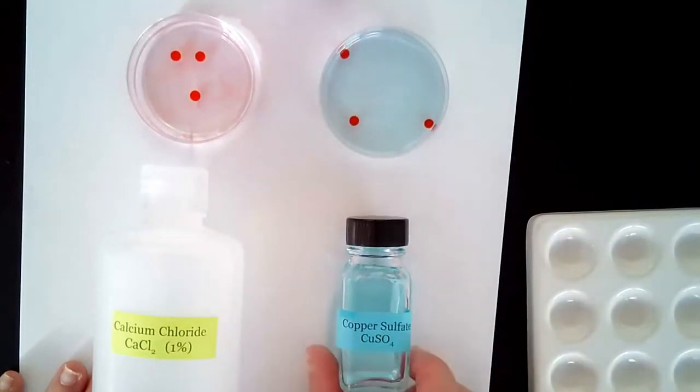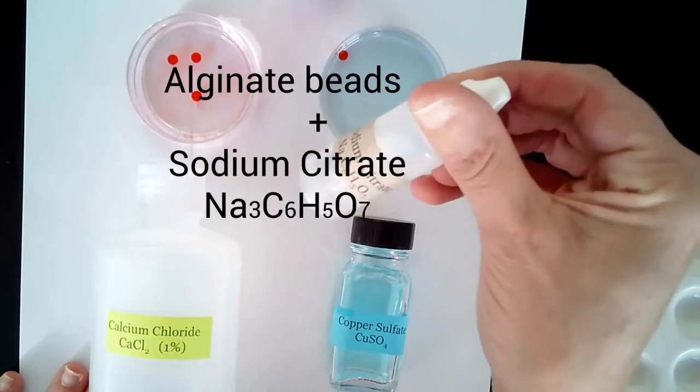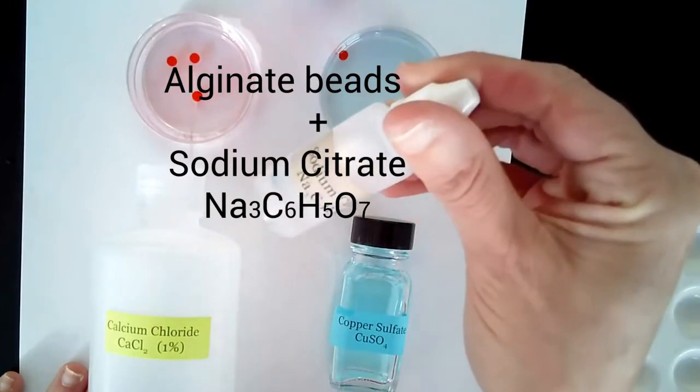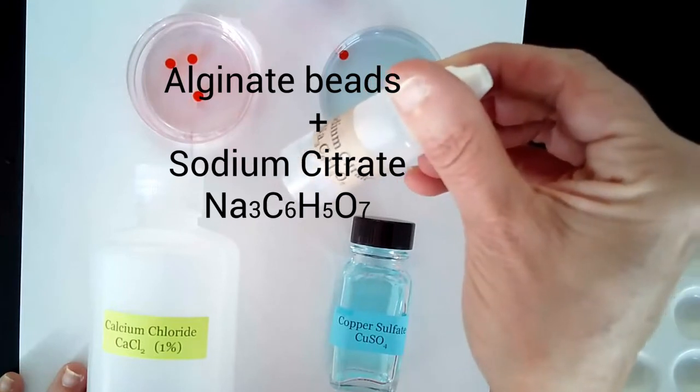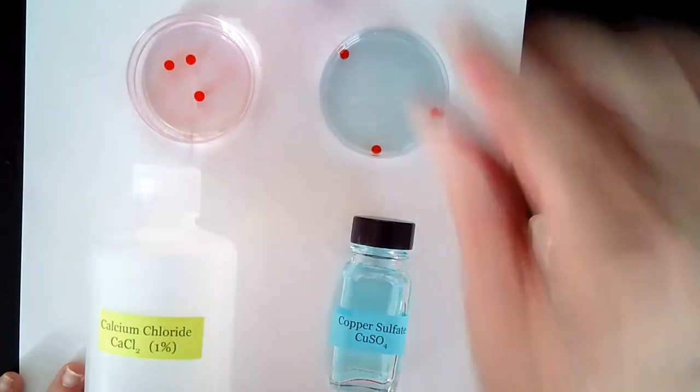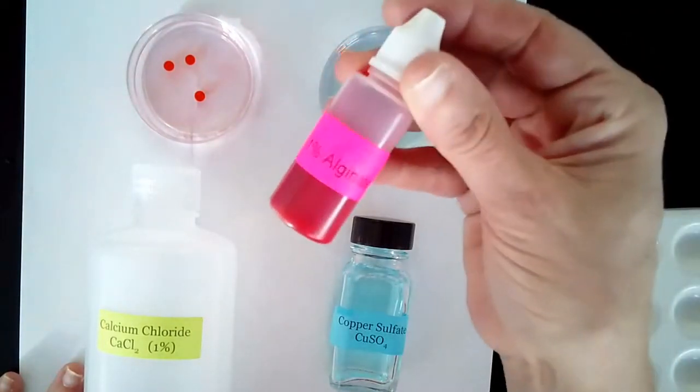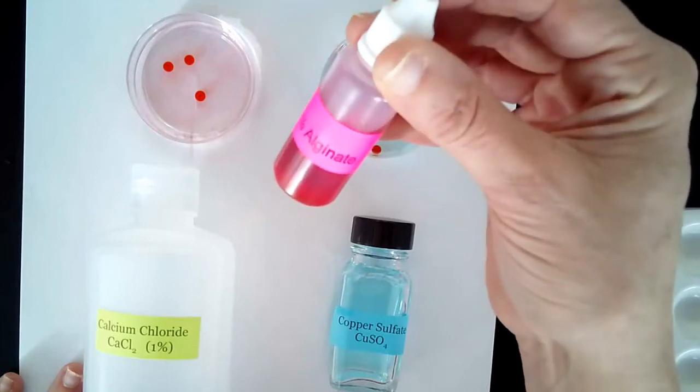In today's lab you are going to see what happens to the alginate beads when you add sodium citrate to the beads. To start, let's just review what kind of beads you can make. Keep in mind we have the alginate and it's pre-made and it's pretty red colored from the food coloring.